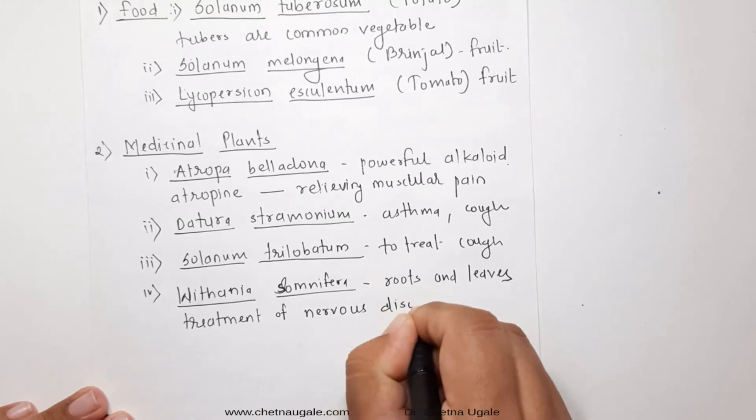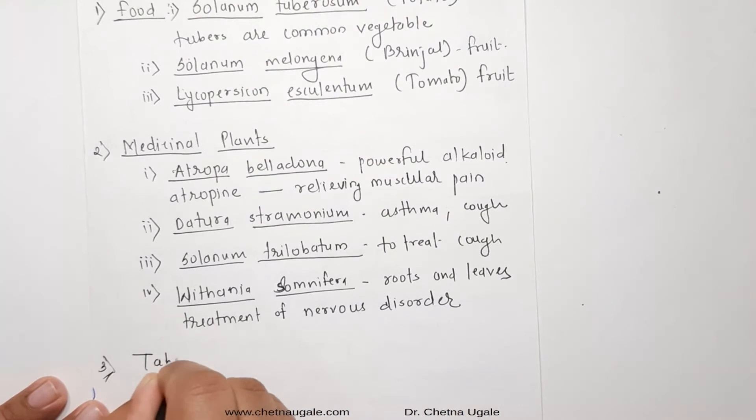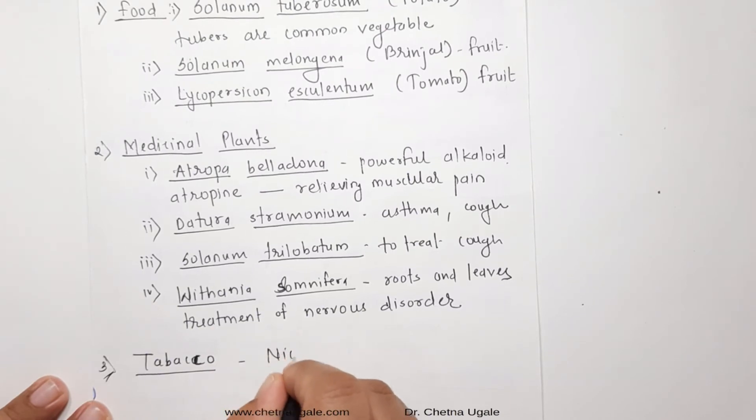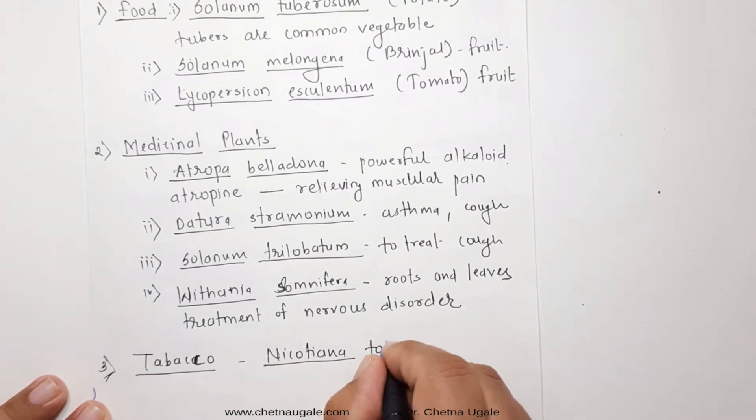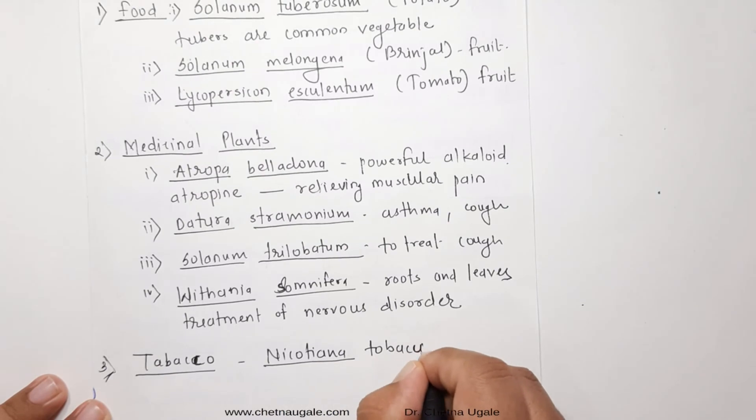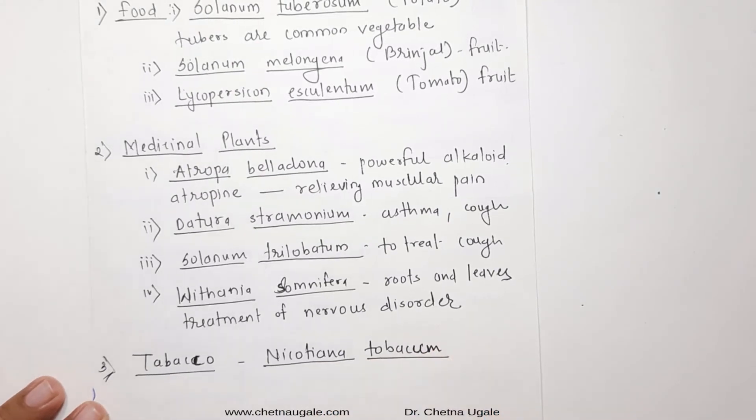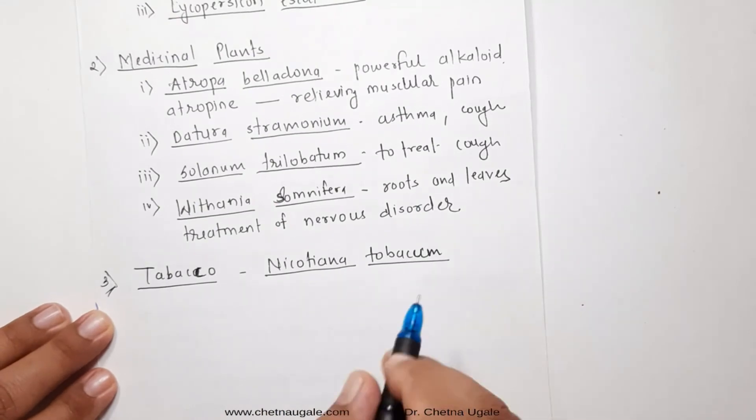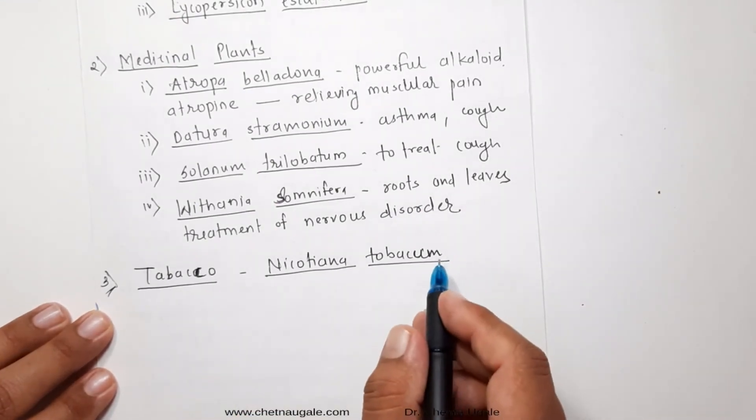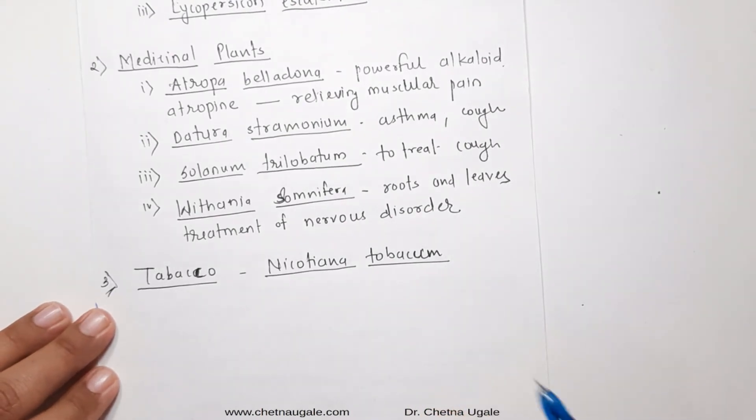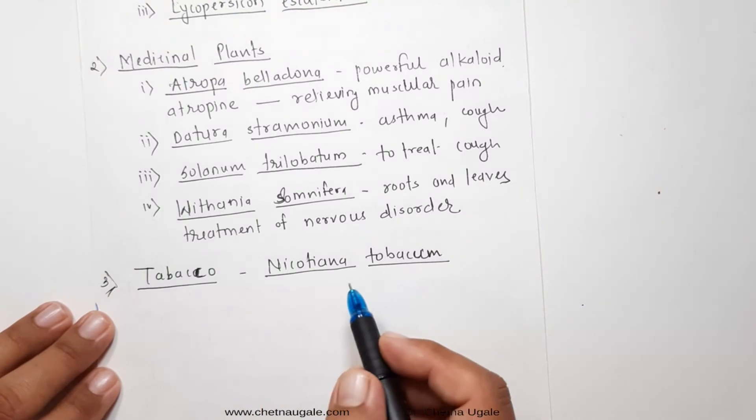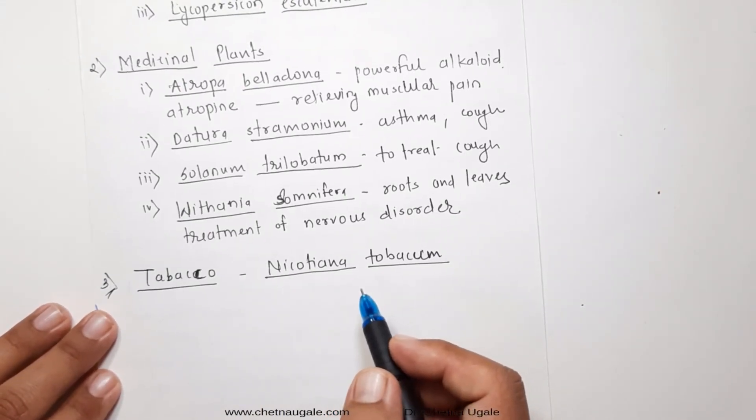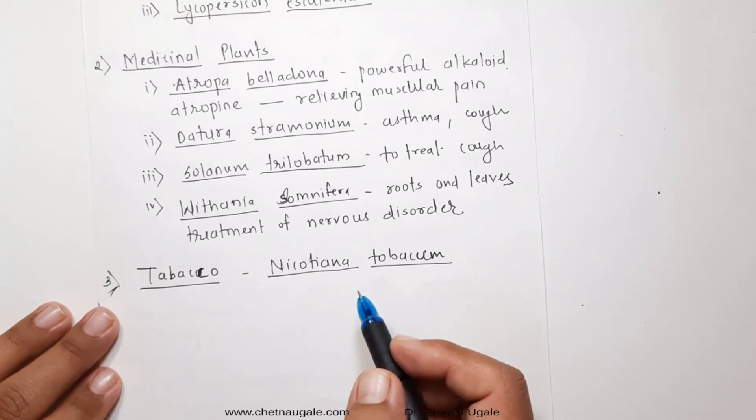Then the next one is tobacco. Yes, tobacco is very well and commonly and largely known. The botanical name is Nicotiana tabacum. Nicotiana tabacum contains the alkaloids which is called as nicotine. This nicotine is considered to be a principal alkaloid in commercial tobaccos such as cigarettes, beedies, pipes, and hookahs, and even as well as in chewing and snuffing.